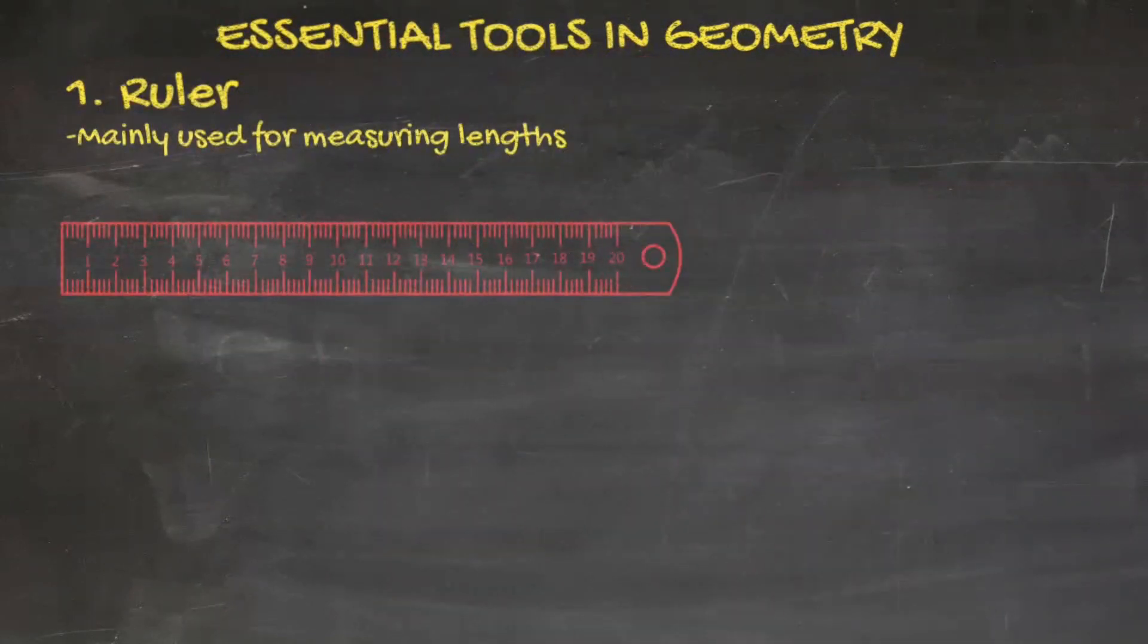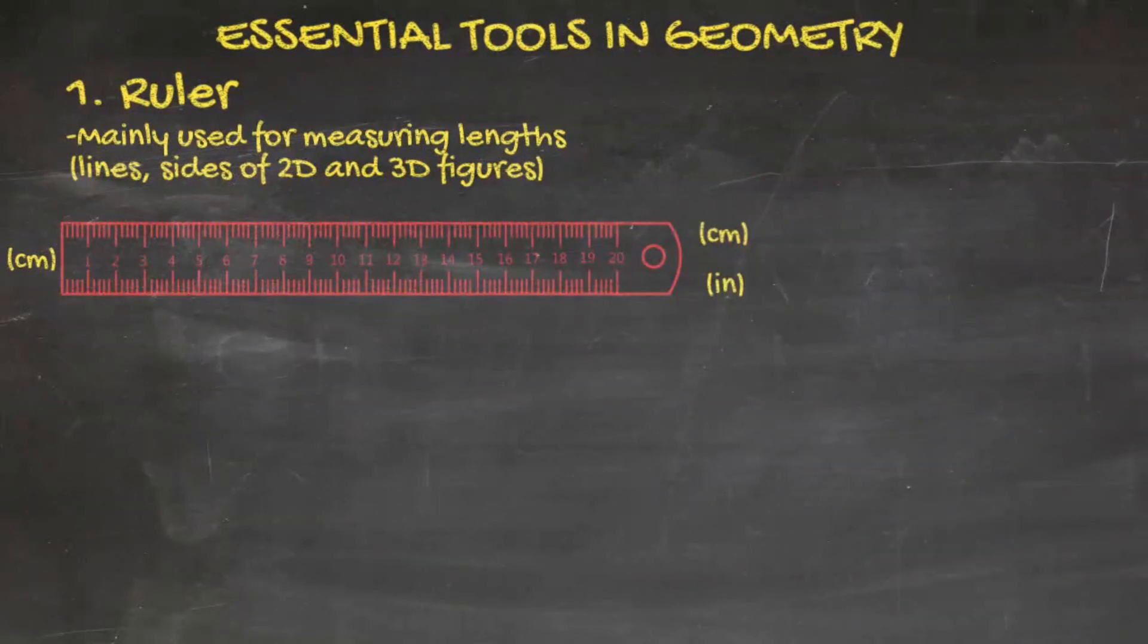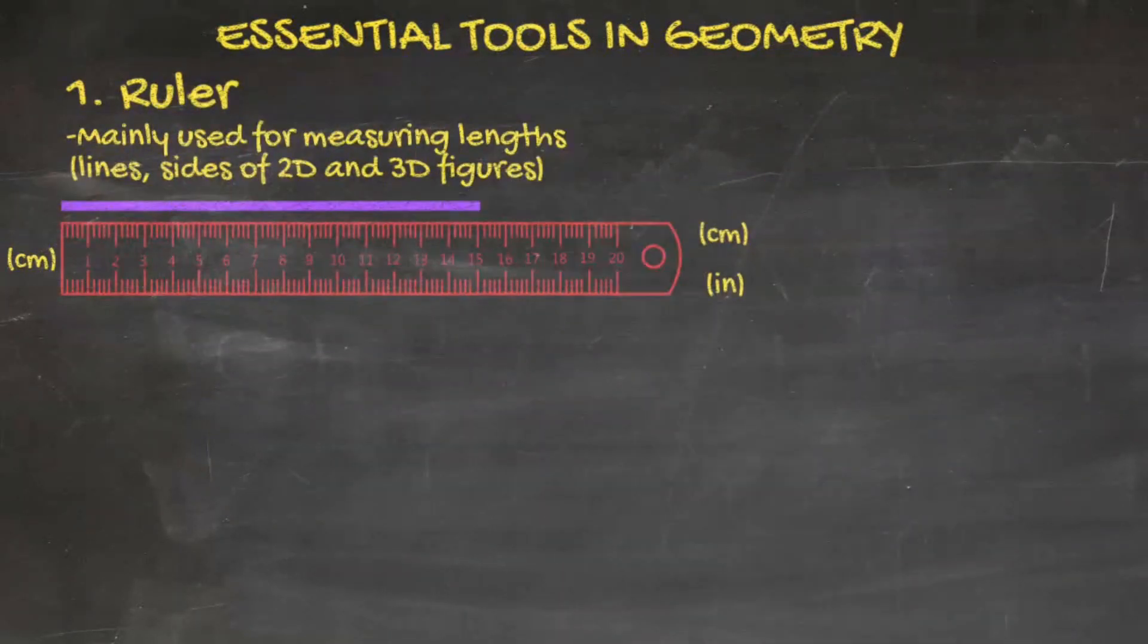Rulers are mainly used for measuring lengths, including lines and sizes of 2D and 3D figures. This ruler can only represent centimeters, but most rulers will represent centimeters on one side and inches on the other.